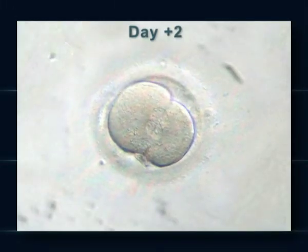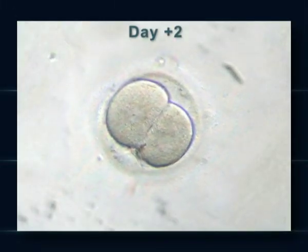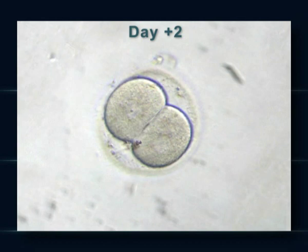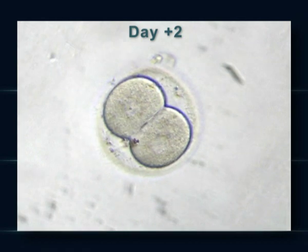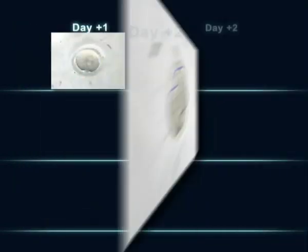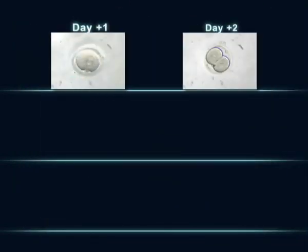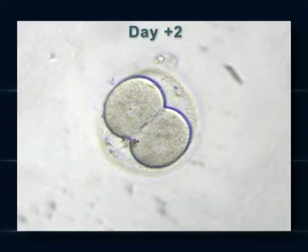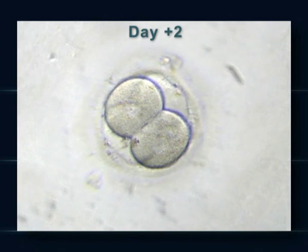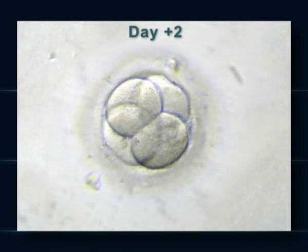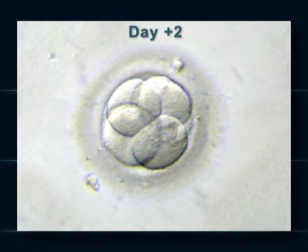Two days after puncture, the embryo divides itself and contains two cells with one nucleus per cell, which in turn starts to divide into an embryo of four cells if its development is optimal.